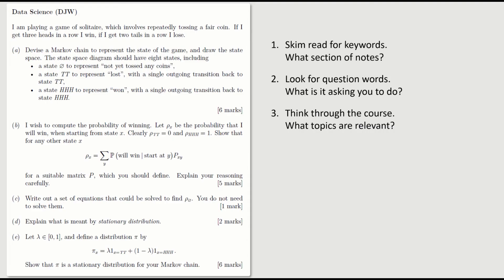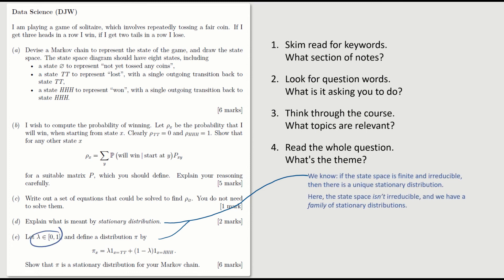Let's go back and review the question as a whole. After answering it all, it's worth rereading the whole question and wondering: is there a theme? I would guess the theme the examiner has in mind is this: we know a theorem which says if the state space is finite and irreducible, then the Markov chain has a unique stationary distribution. But here our state space isn't irreducible — once you get into the win state or the lose state, you're stuck there. So the theorem doesn't apply. What we've proved in Part E is that there is a whole family of stationary distributions indexed by the parameter lambda.